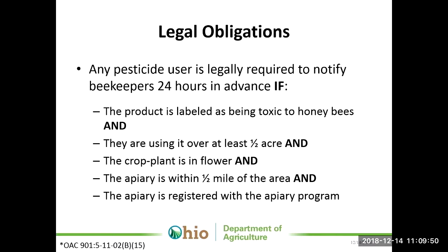Traditionally, an applicator would have to call into our office and request a list of registered beekeepers in a particular county, get a list of addresses, and try to figure out where these are in relation to their application area — which is really not the best setup. But having this mapping program, you can very easily see where these sites are and notify beekeepers if you fall into the notification requirement category.